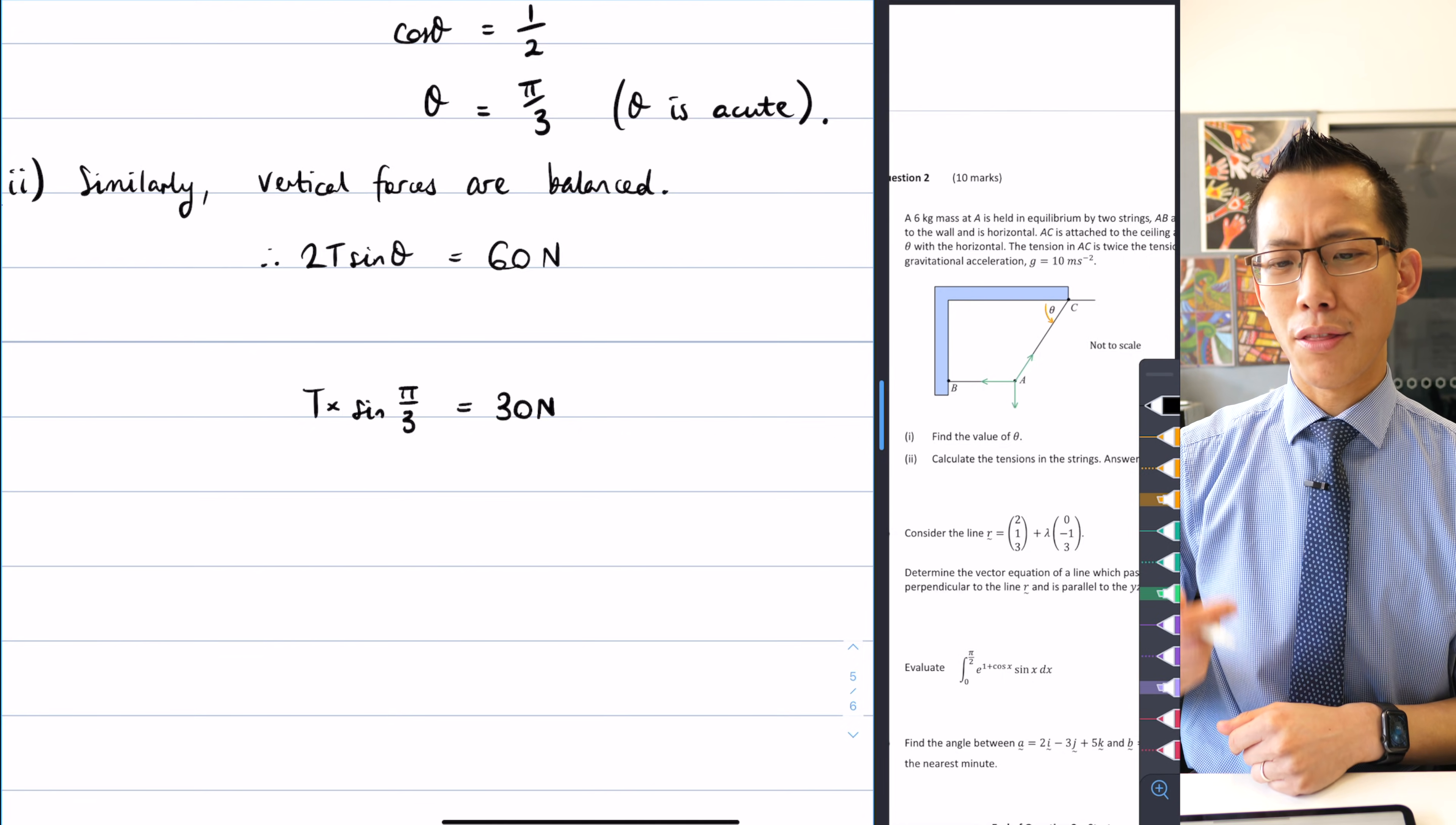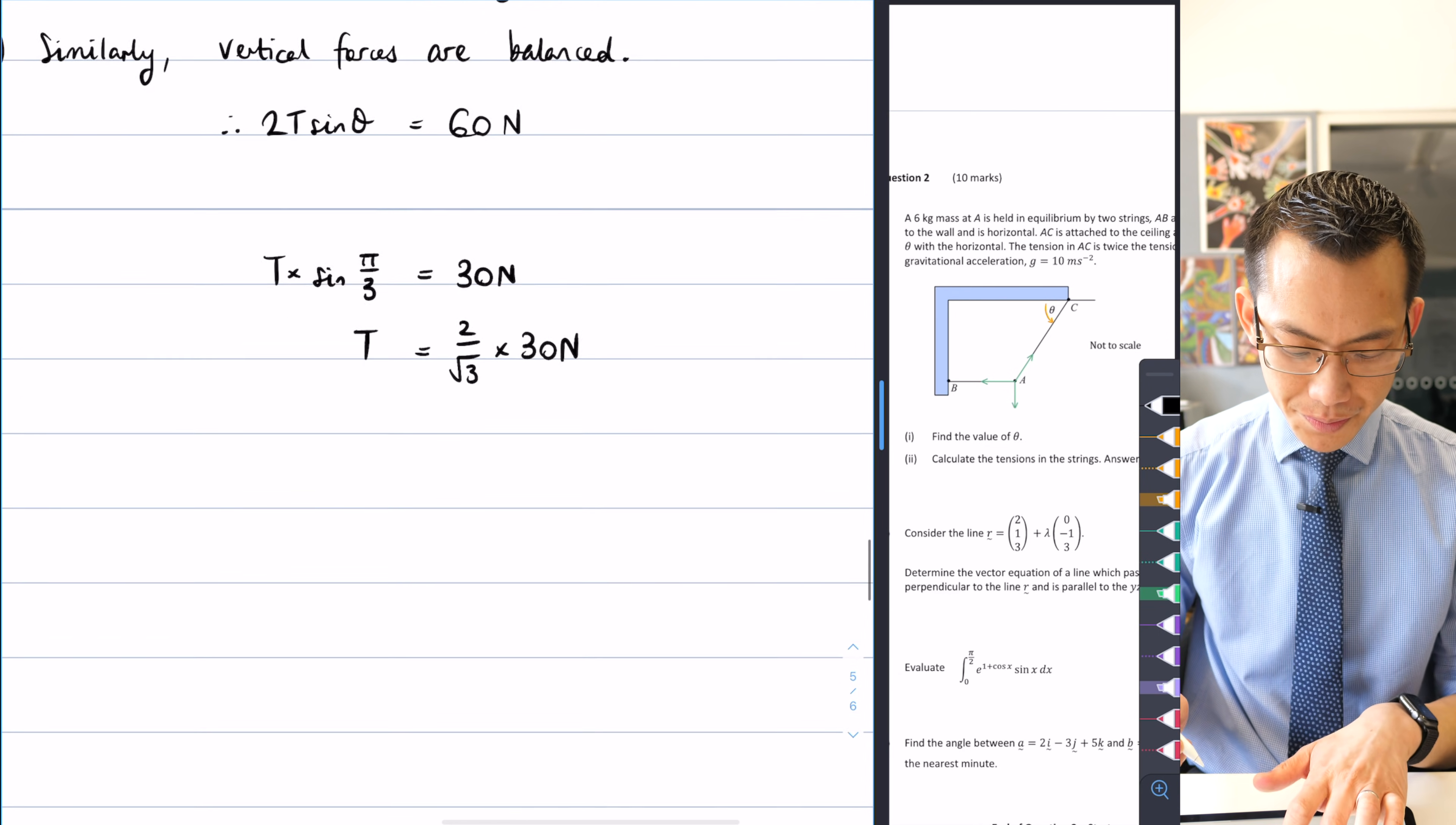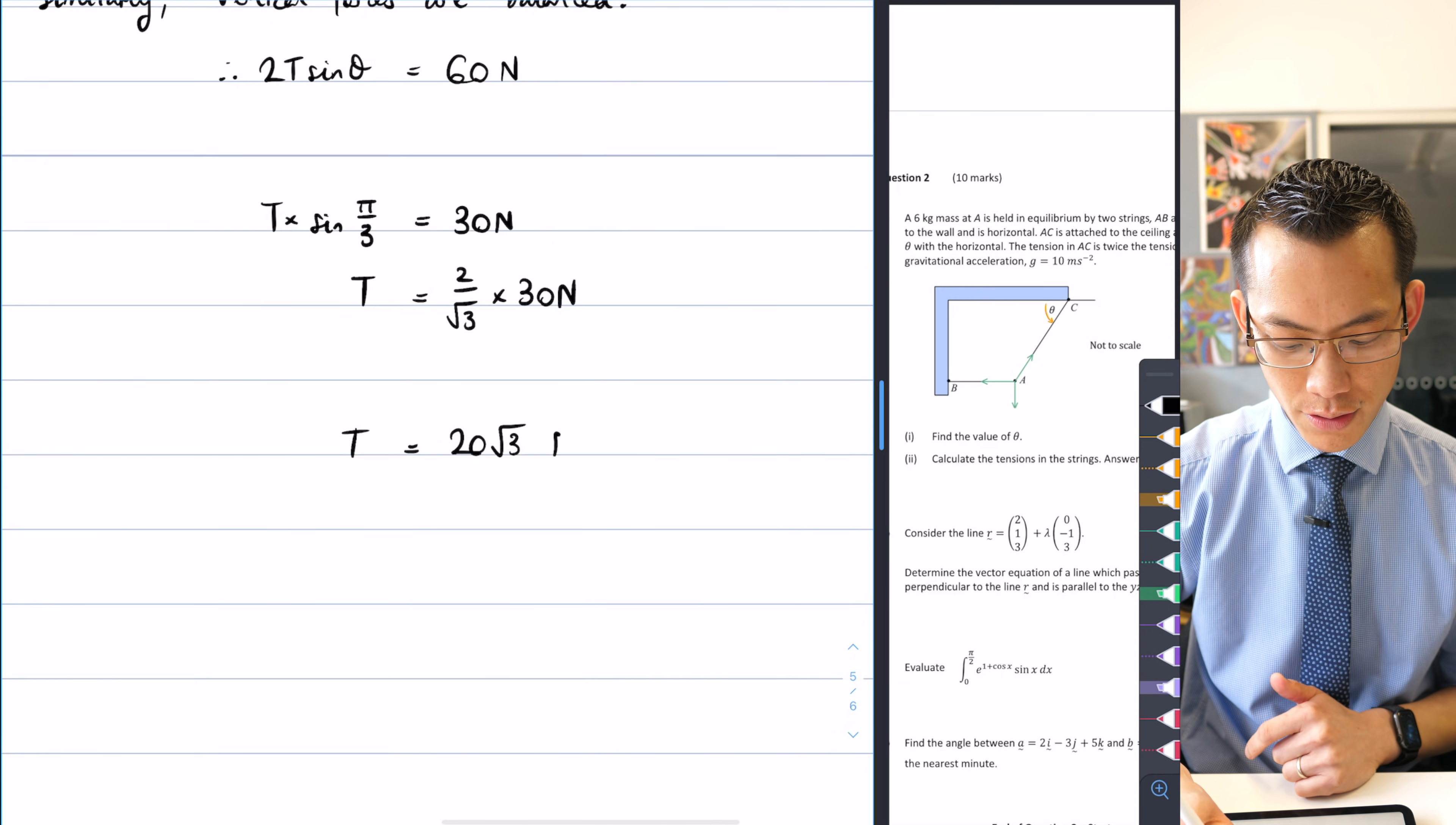Last I checked, sine pi on 3 is root 3 on 2, so t is going to be 2 on root 3 times 30 newtons. And so t is just going to be equal to, if you cancel through and I can also rationalize the denominator, that's going to be 20 root 3 newtons.